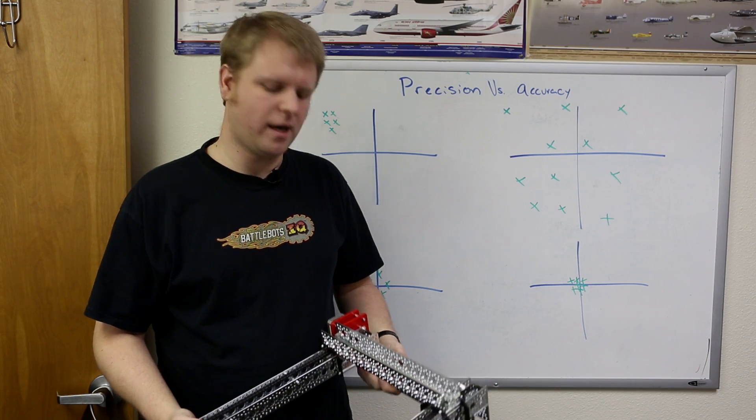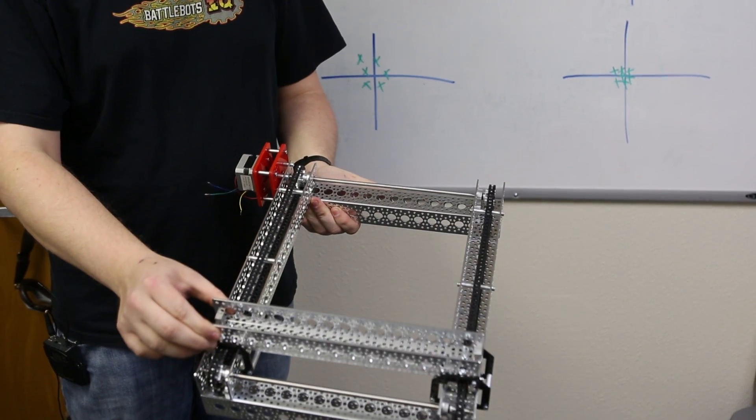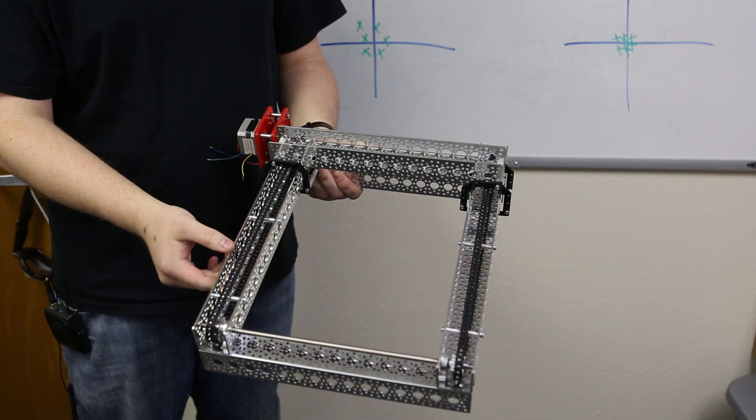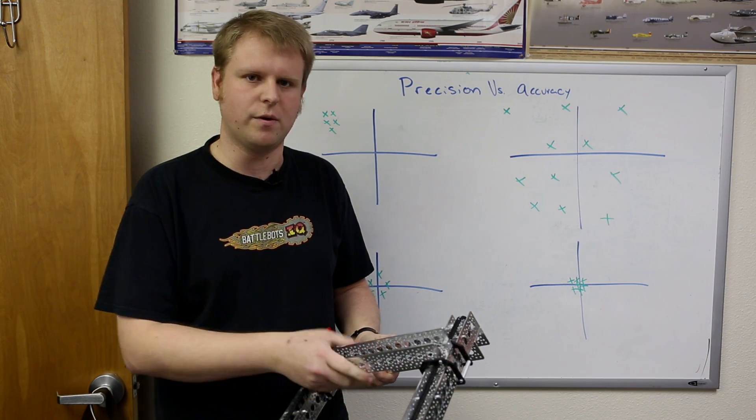We can see these principles applied in a gantry built by one of our engineers here. As you can see there's a motor driving a chain which moves this along a gantry. This is useful for pick-and-place machines or some sort of a 3D printer.